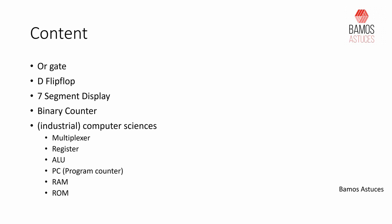ALU stands for Arithmetic and Logic Unit. We will also cover a PC — not personal computer — but program counter, and I will explain what it is when we get to that point. We will see how to realize a RAM, which is the memory unit used to store the results of computation, and also a ROM — a read-only memory.